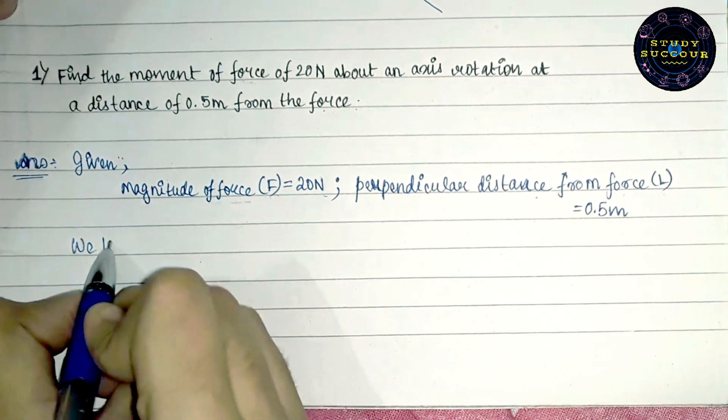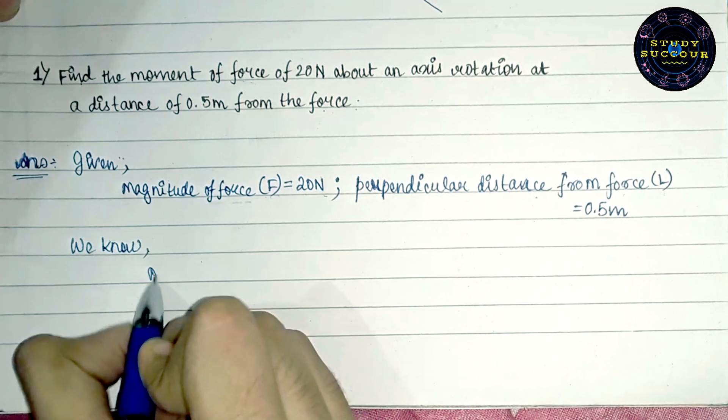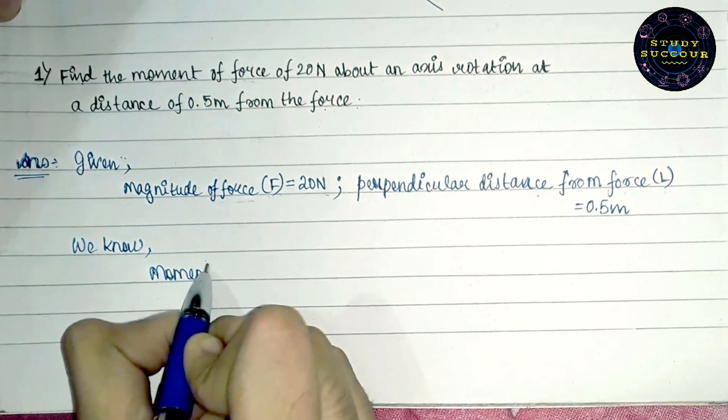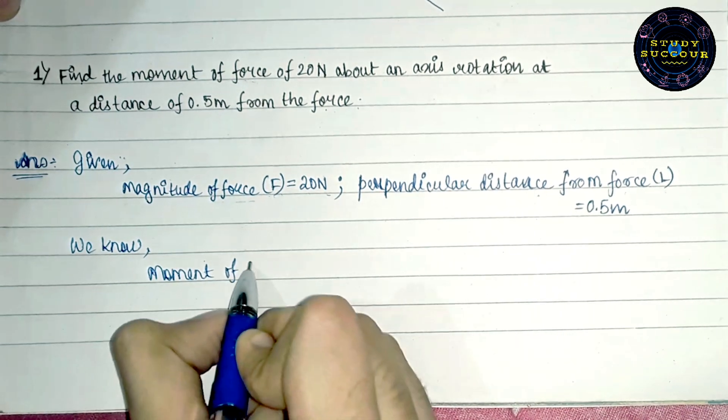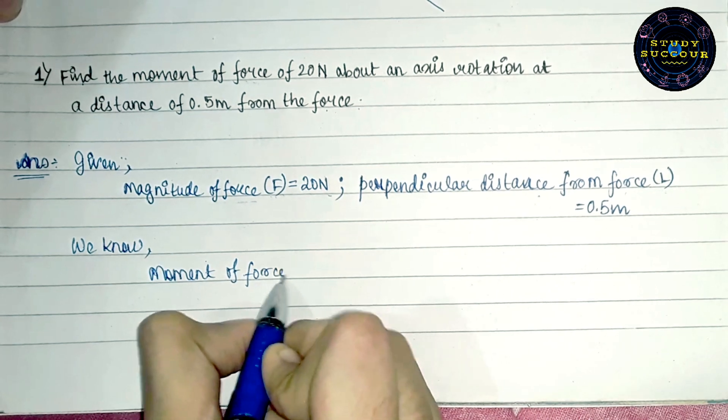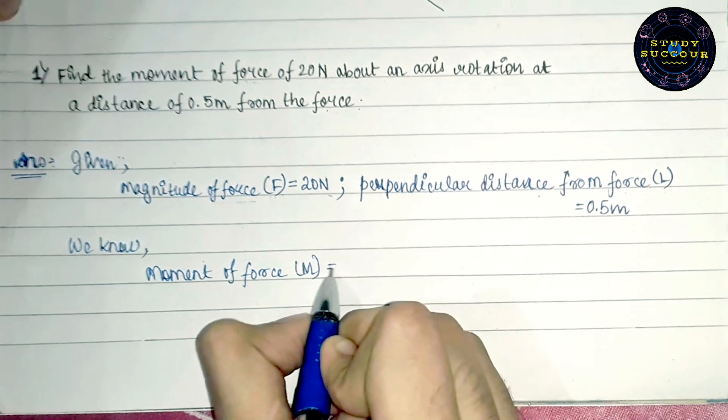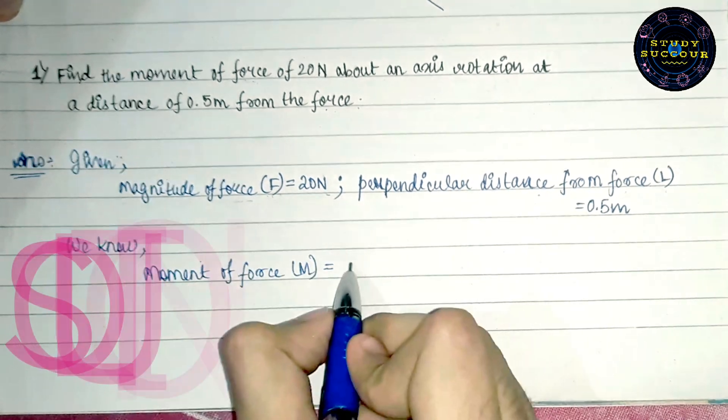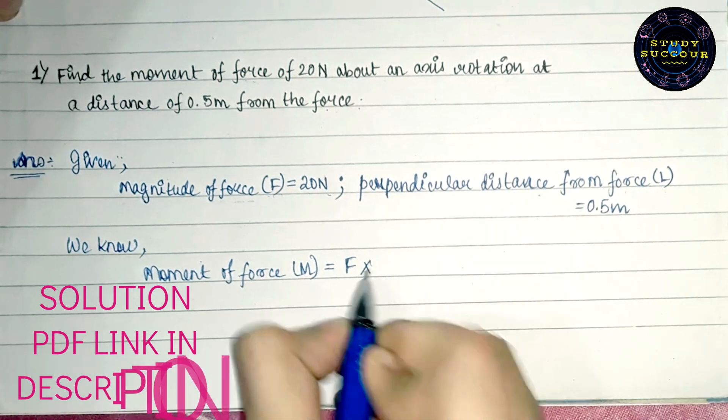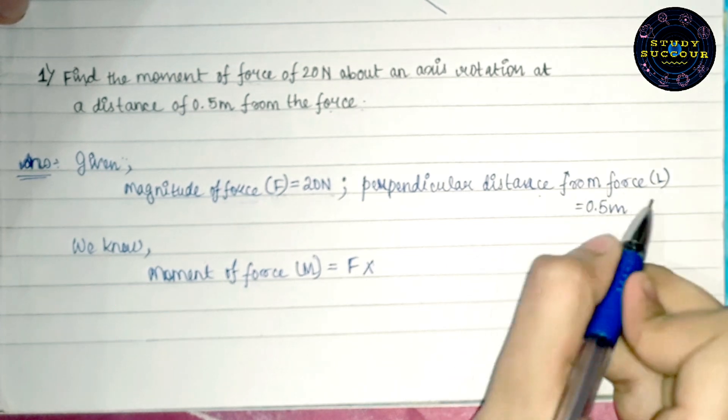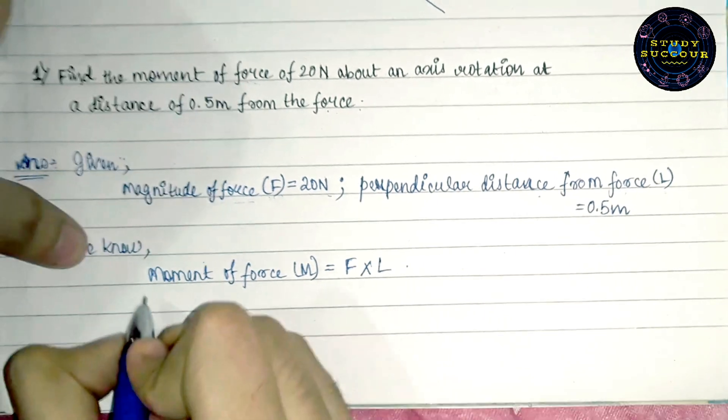Now, we know that moment of force which we will be denoting by M is equals to magnitude of force that is F into perpendicular distance from force that is L.